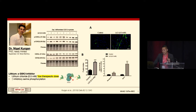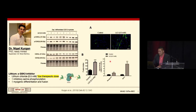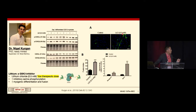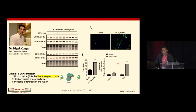Because of this inhibition of GSK-3, we saw an enhancement in myogenic differentiation and fusion. The myotubes stained in green are larger and have more nuclei. When we probed for differentiation markers such as myogenin and myosin heavy chain, we saw an increase in both their protein content.